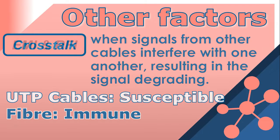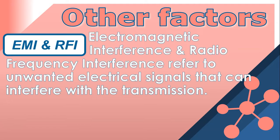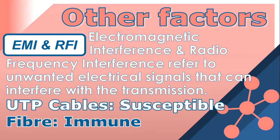EMR, or electromagnetic interference, and RFI, or radio frequency interference, refer to unwanted electrical signals that can interfere with data transmission. UTP cables are susceptible to EMR and RFI from devices like machinery and radar, although the twisting of the wires does help reduce it. Fiber cables are not affected by EMR and RFI because they use light to transmit data, making fiber optic cables the winner in these categories.